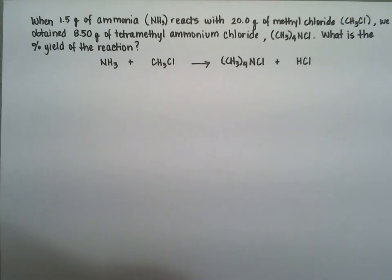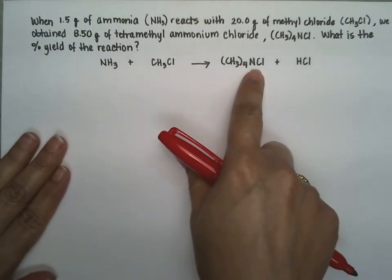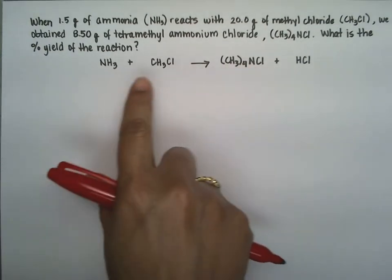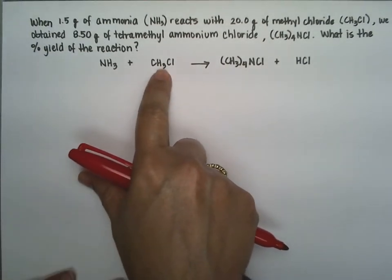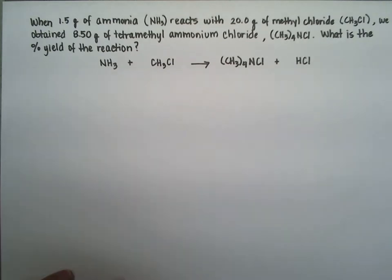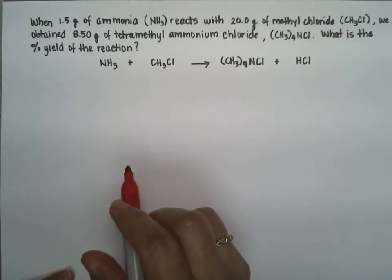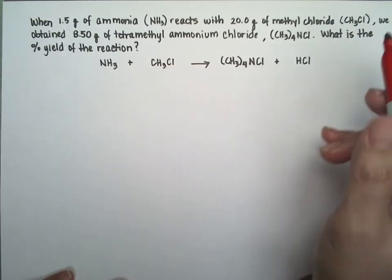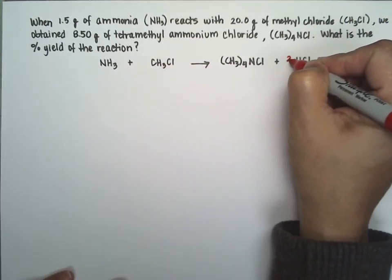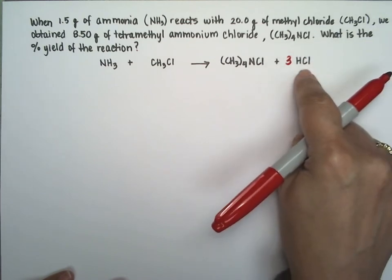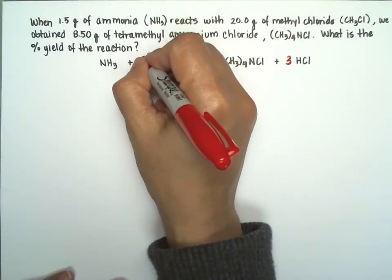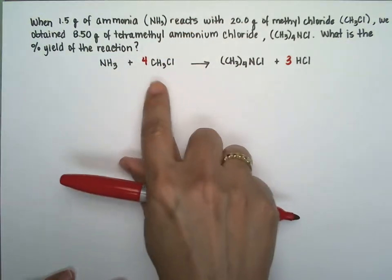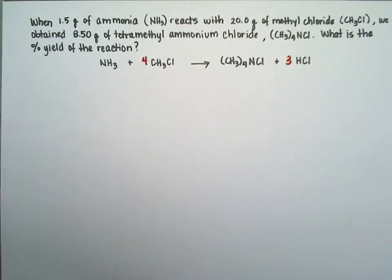Before we calculate the limiting reagent, we make sure the reaction is balanced. We have one nitrogen on each side. We have three hydrogens plus three, that's six — that's twelve — so we're a little off on the hydrogens. We have two chlorides on one side and one chloride on the other, so after balancing we get three moles of HCl and four moles of methyl chloride.